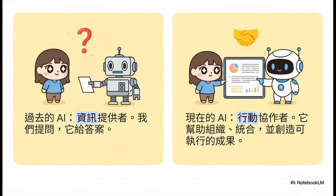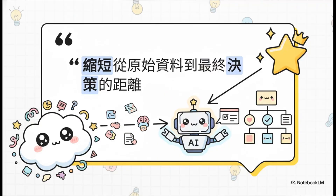AI正在进化成为我们的行动协作者。它不再只是被动地回答你，而是会主动地跳出来，帮你组织、统合，并且创造出可以直接拿来执行的成果。这一切的关键点，其实就是这句话——缩短从原始资料到最终决策的距离。AI现在扮演的角色就是帮助我们这些知识工作者，用最快的速度把一堆混乱的原始数据转化成清晰、可以马上执行的洞察跟决策。这不只是进步，这根本是一种效率上的大跃升。